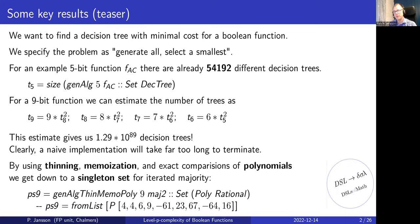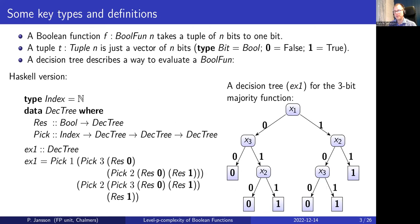So that was the teaser. Now we proceed to step-by-step definitions. A boolean function maps a tuple of n bits to one bit. A tuple is just a vector of n bits. I'll use 'bit' and 'bool' interchangeably, using bold 0 and 1 for false and true. A decision tree is a tree-like structure that defines how to evaluate a boolean function.